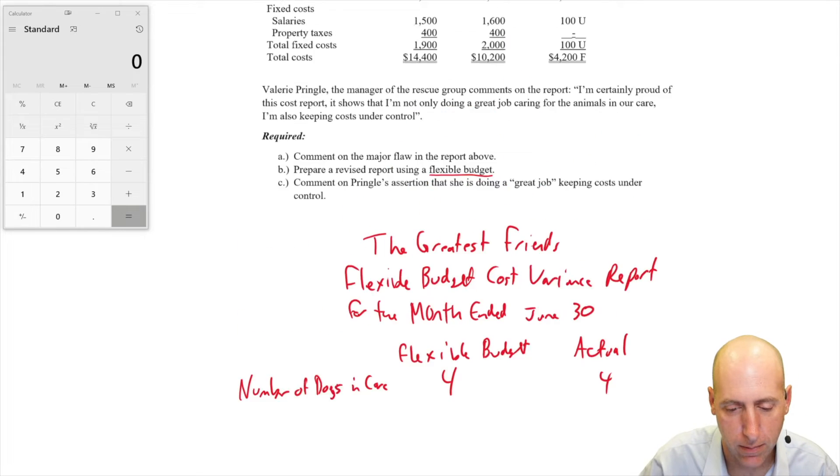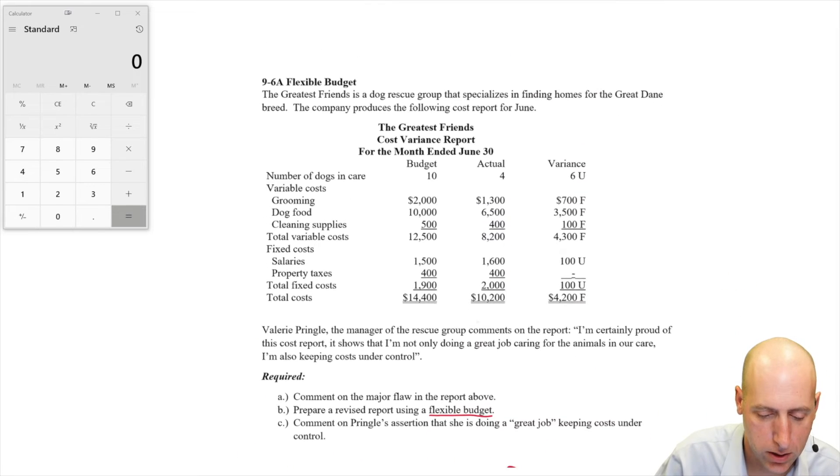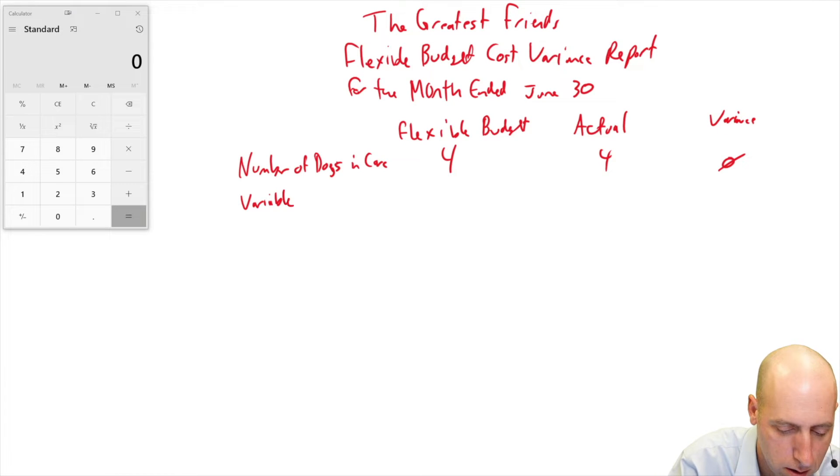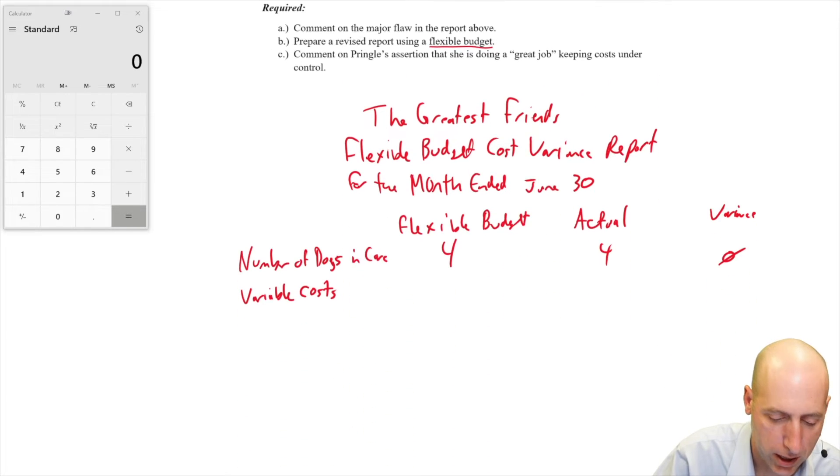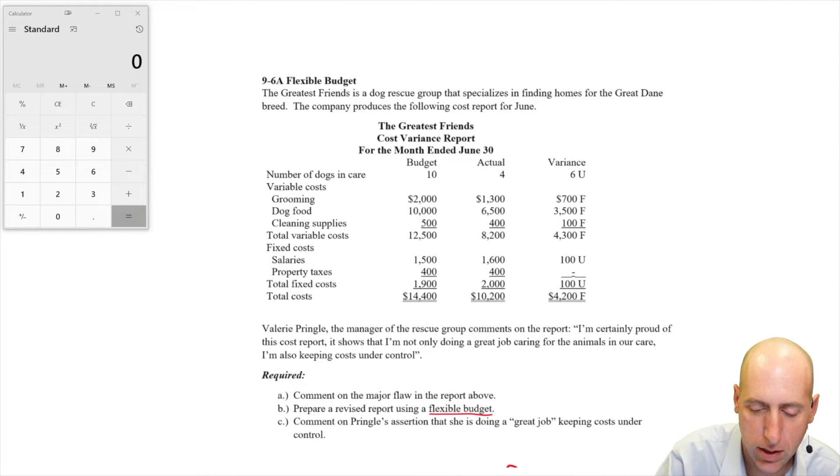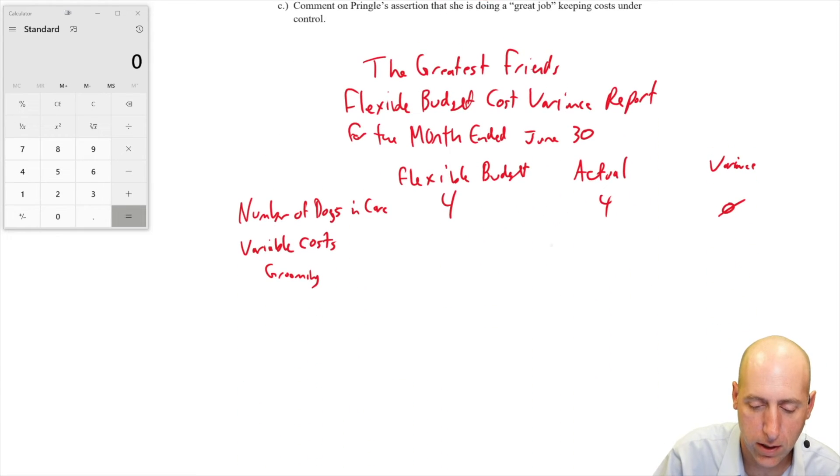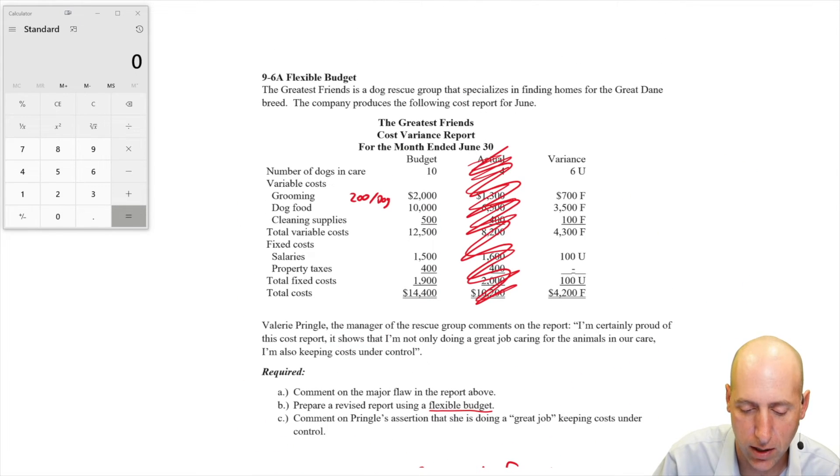I'm going to compare that flexible budget to my actual numbers. So here's what we do. We say number of dogs in care. And we just basically take down the entire budget and redo it at four. Actual is four. There's no variance there. Let's go to our variable costs. Grooming. Our grooming cost based on 10 dogs. Now here's a place where I just ignore the actual until I'm going to write it all down. Grooming cost, it's $2,000. We budgeted for 10 dogs, but if it's truly variable, that means the cost is 2,000 divided by 10. It's $200 per dog. So if we got four dogs, the grooming cost is four times 200. The grooming cost ought to be $800 if we've got just four dogs.